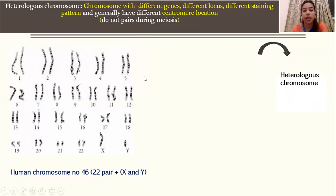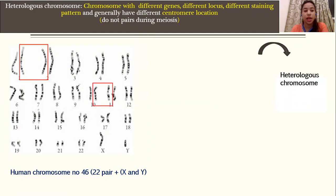Let's take the same example of the human karyotype having 46 chromosomes, where 22 pairs are present as homologous pairs plus X and Y — this is the male karyotype. If we consider the heterologous chromosomes separated from this figure, in one box chromosome one and chromosome two make a heterologous pair. In another box, if we consider the 10th and 11th chromosomes, these chromosomes make a heterologous pair.